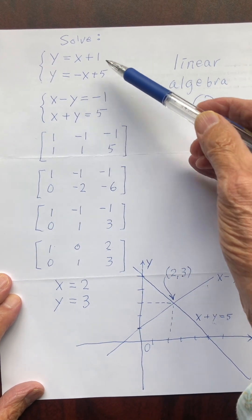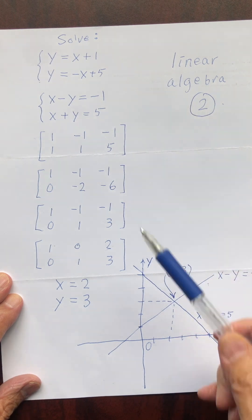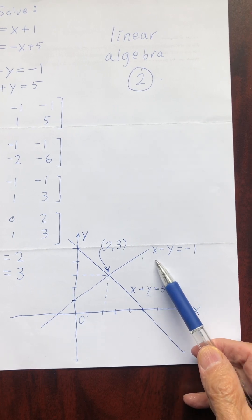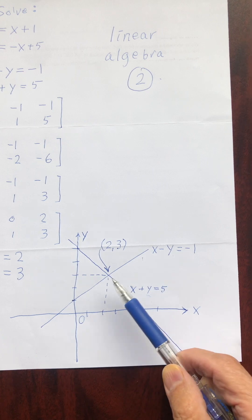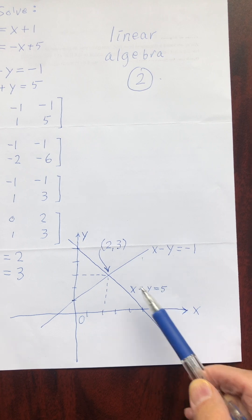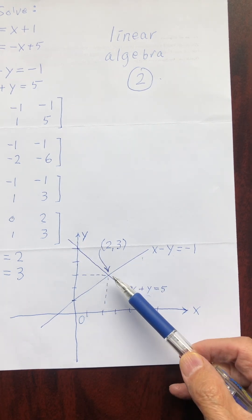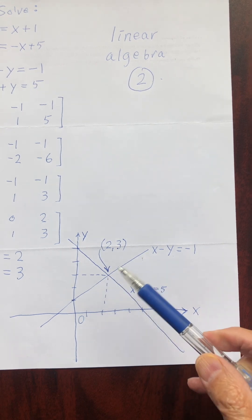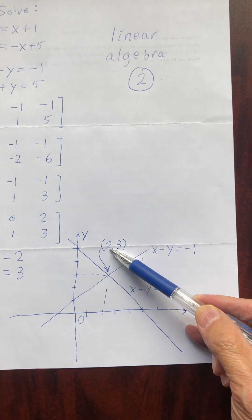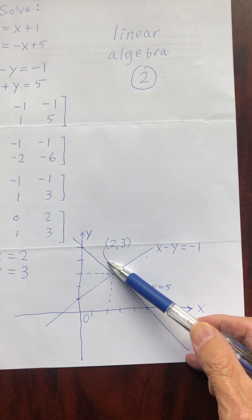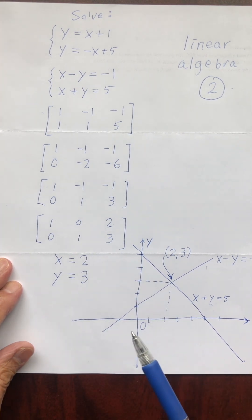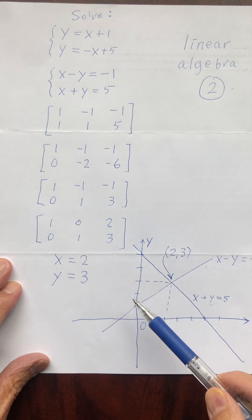The given system of equations can be graphed. The first equation, x minus y equals negative 1, is one line. The second equation, x plus y equals 5, is another line. The coordinates of the intersection point are 2 and 3, which is the solution. Graphically, the solution represents the coordinates of the point of intersection.